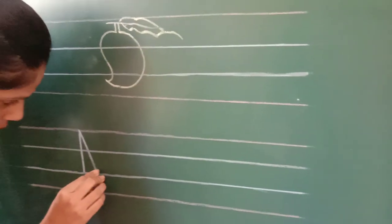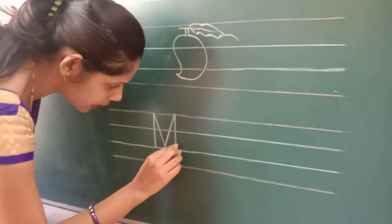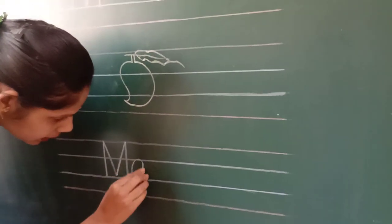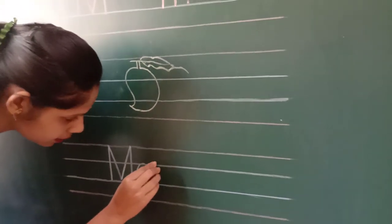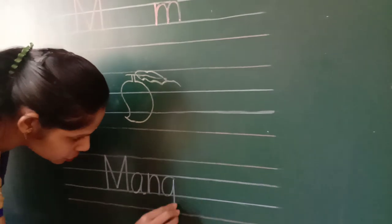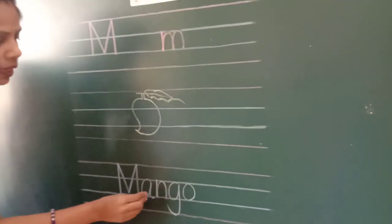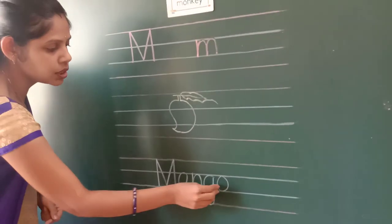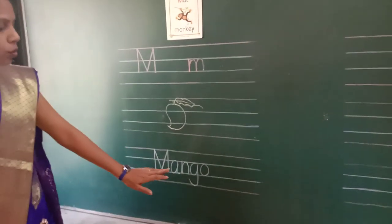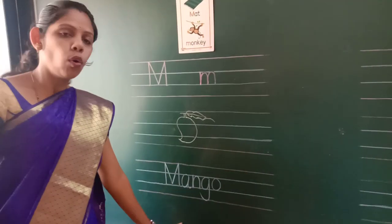On the next line, we are going to write the spelling of mango. First letter always capital: M, A, N, G, O — mango. You are going to write this spelling on a whole page.